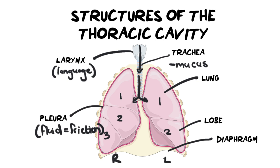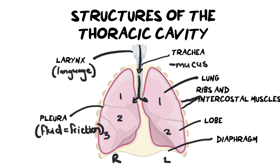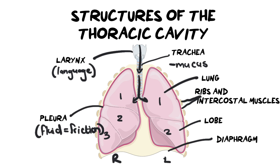The last protective structures for the thoracic cavity and lungs are the ribs and the intercostal muscles that sit in between them. The ribs and intercostal muscles provide protection, but they are also important breathing structures because they initiate making the thoracic cavity bigger, allowing you to pull air in and breathe.